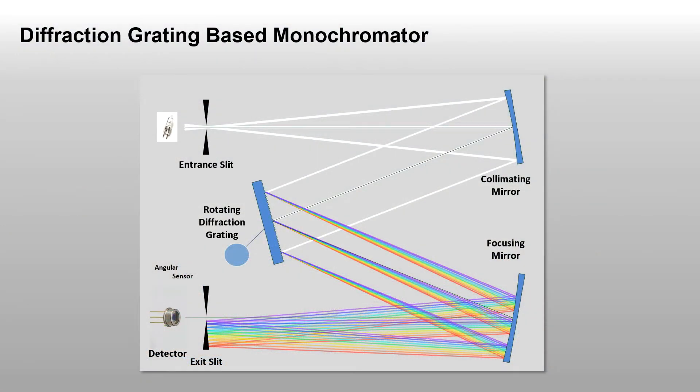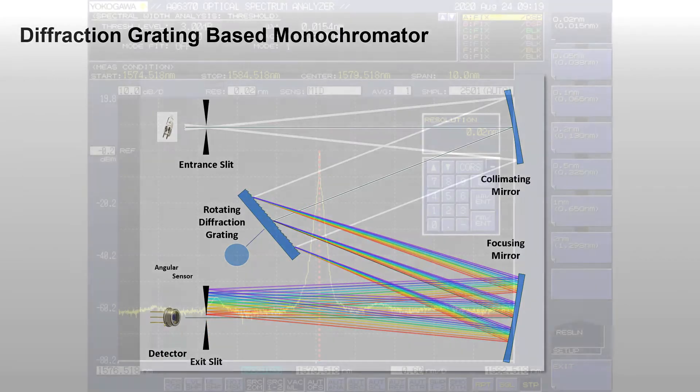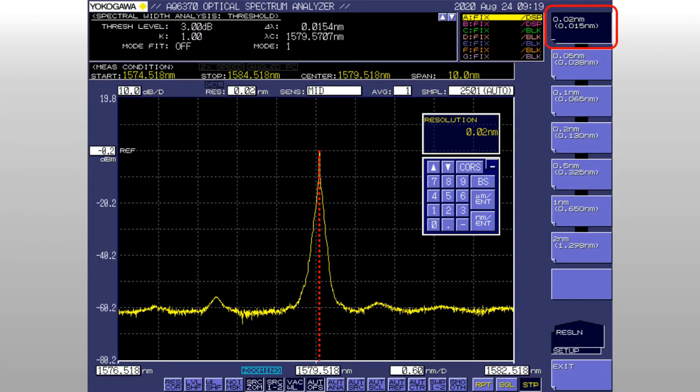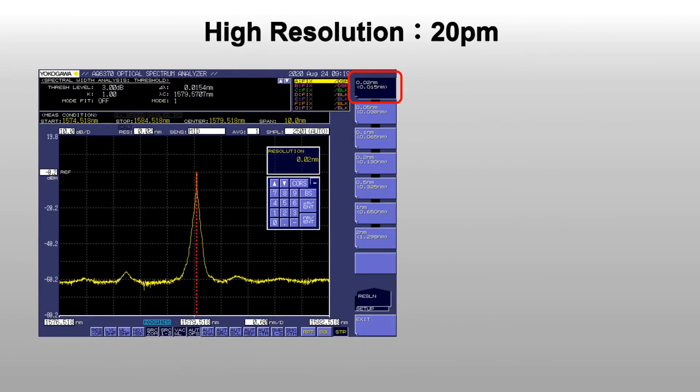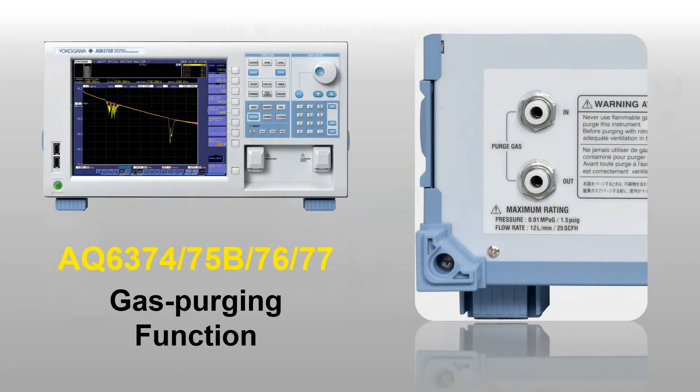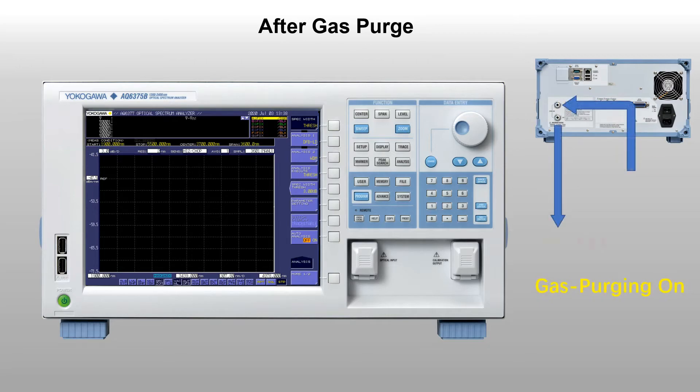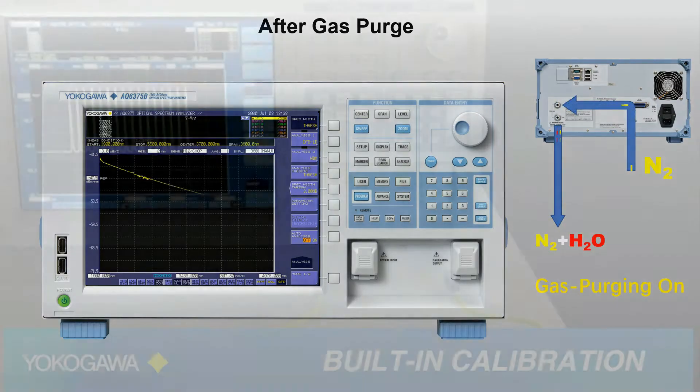The component at the heart of these Yokogawa spectrum analyzers is an advanced monochrometer, which is able to distinguish spectral light signals at a resolution of 20 picometers. In the longer wavelength members of the series, this monochrometer also includes a closed-circuit gas purging system. This evacuates water molecules from the measurement chamber, eliminating the risk of interference caused by light absorption.